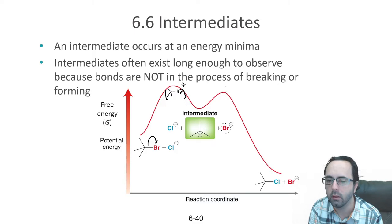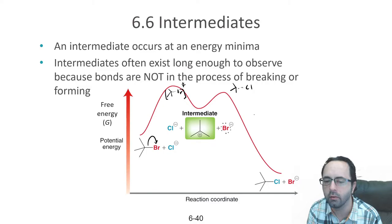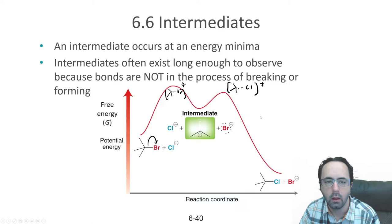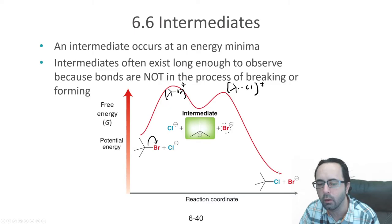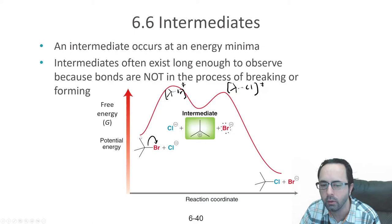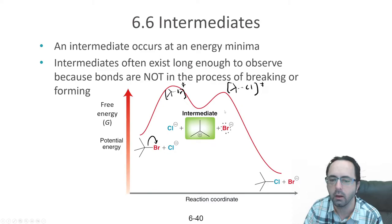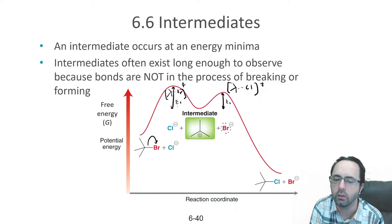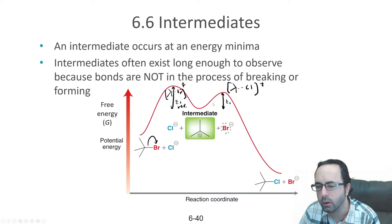Then we go through a second transition state where the bond to chlorine is beginning to form. After that, the reaction proceeds and the bond between carbon and chlorine is fully formed. The intermediate occurs at a relative energy minimum — it's lower in energy than either of the transition states, though not particularly stable. It will go on to produce products, or in some cases go back and recover the reactant. The activation energy to go forward is smaller than the activation energy in the reverse direction, so this reaction will go significantly more quickly in the forward direction.